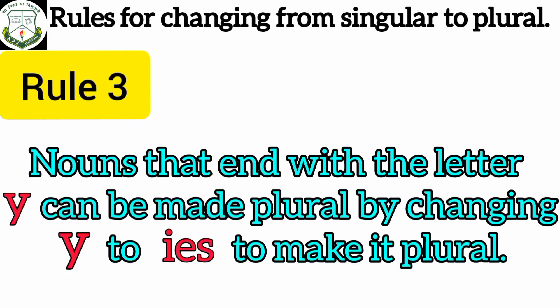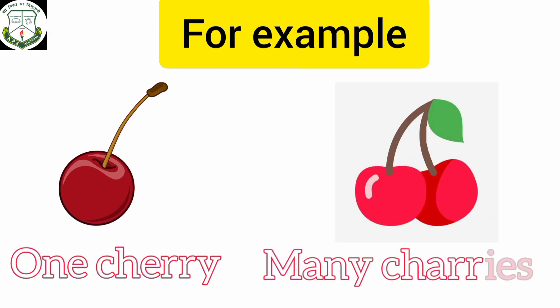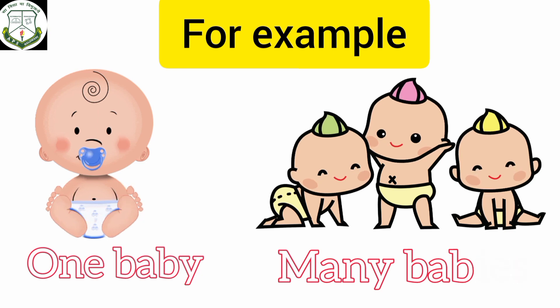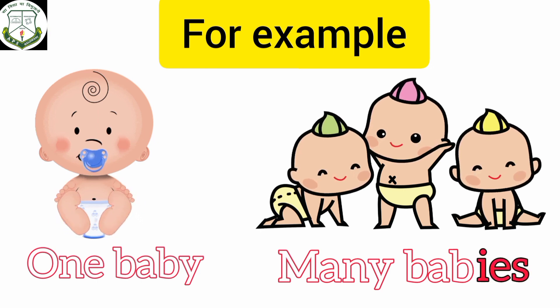Rule number 3: nouns that end with the letter Y can be made plural by changing Y to IES. For example, one cherry — many cherries. To change the word cherry to cherries, we remove the letter Y at the end and instead we write IES. Second example: one baby — many babies. We remove the letter Y at the end and instead we write IES.